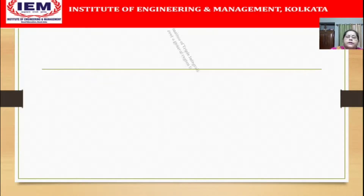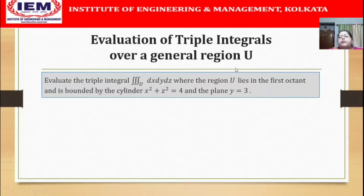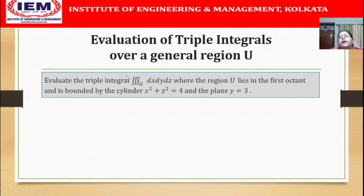Let us move on to another problem. Evaluate the triple integral of dx dy dz over the region U, where U lies in the first octant and is bounded by the cylinder x² + z² = 4 and the plane y = 3. Note that this triple integral of dx dy dz gives the volume of the region U, so our answer will be the volume of this region.